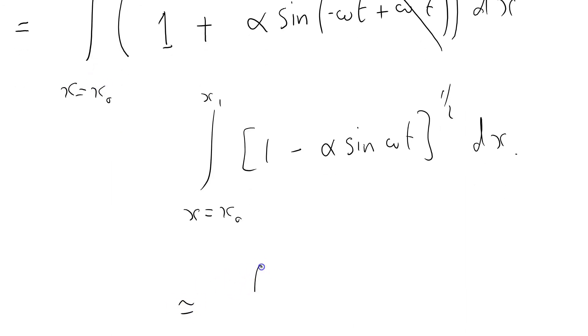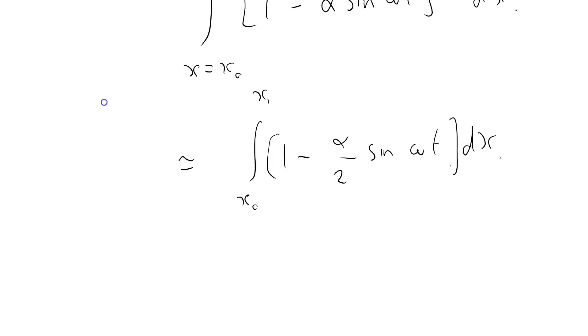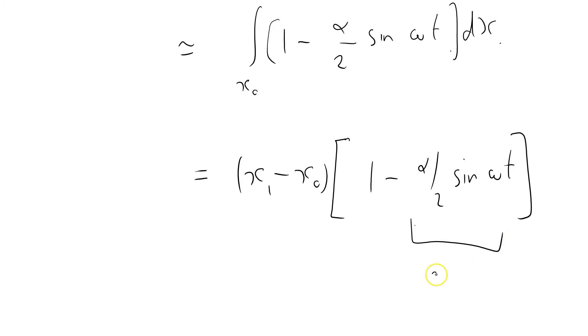This is approximately equal to the integral from X naught to X one of one minus alpha over two sine omega t dx, equals X one minus X naught times one minus alpha over two sine omega t. Aha! It oscillates. And this is what a gravitational wave is.